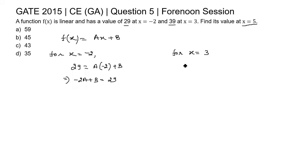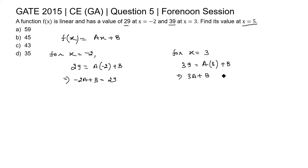Another value is given: 39 at x equal to 3. So for x equal to 3, the value of the function is 39. We may write 39 equal to 3a plus b, which rearranges to 3a plus b equal to 39. This is equation 2.